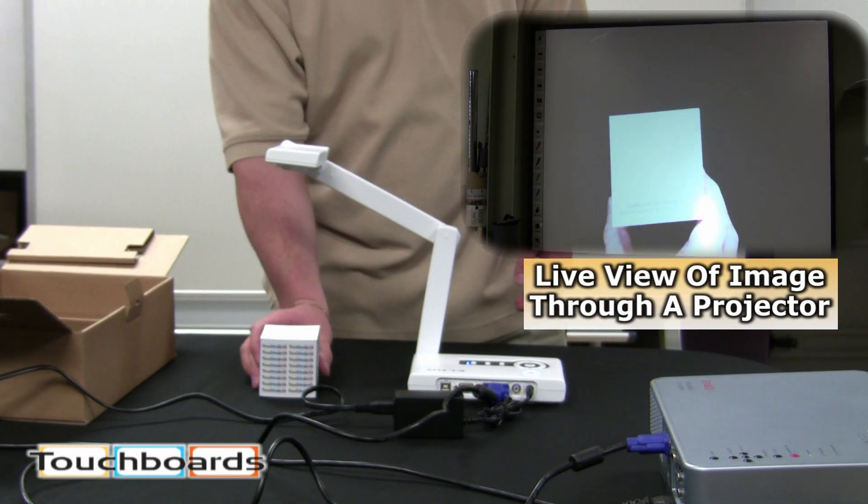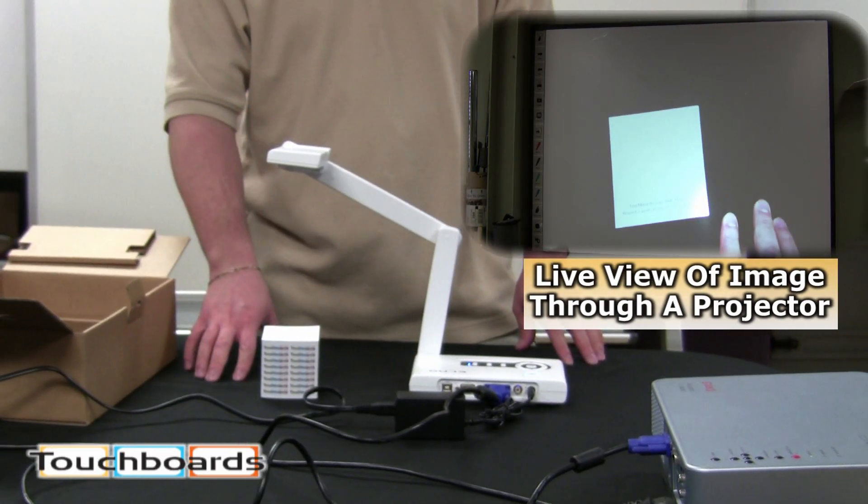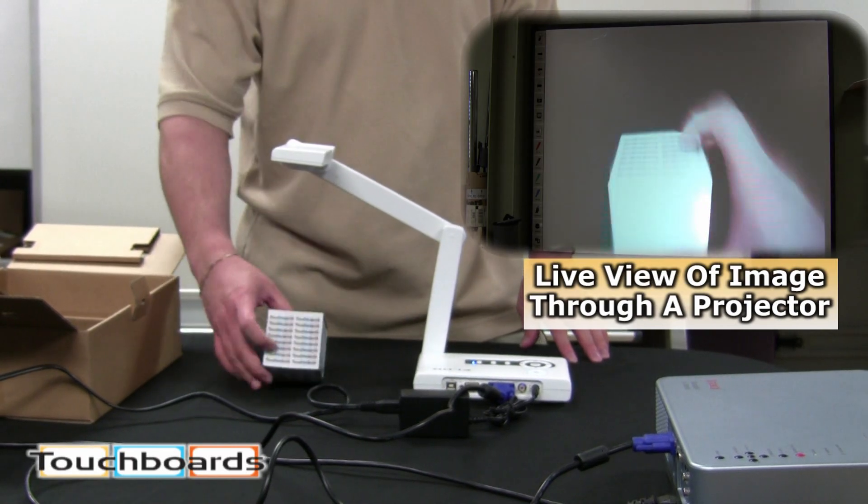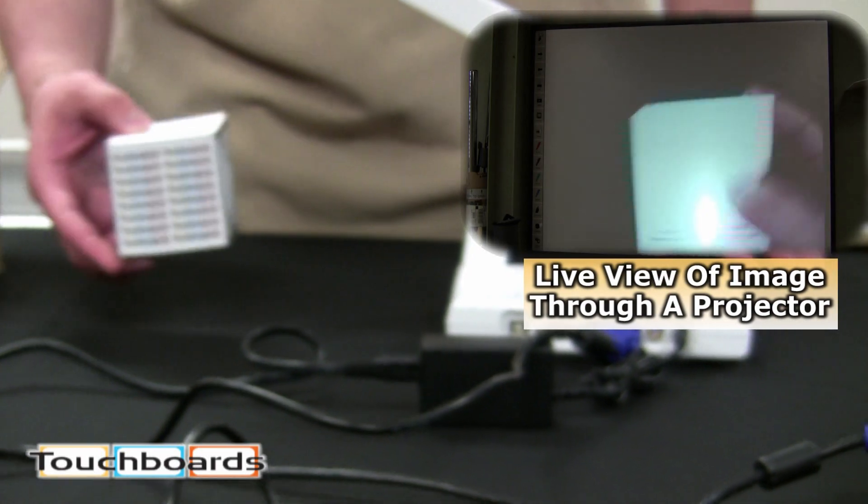So, as you can see, I have my little notepad here to put under the camera. You can use any paper, magazines, books, or any three-dimensional object just like this. It does show video. As you can see, I am moving it around.